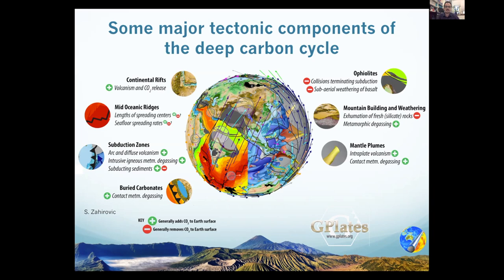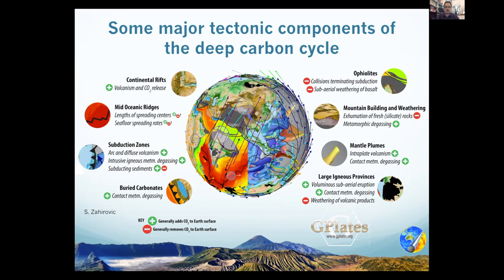You can see in this cutaway the regions of mantle plumes — these upwellings in the mantle — and what they produce are these large igneous provinces, which have been implicated in major perturbations to the global carbon cycle.